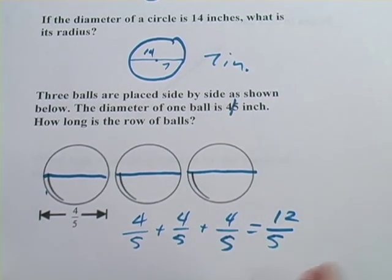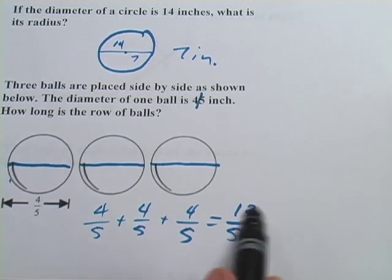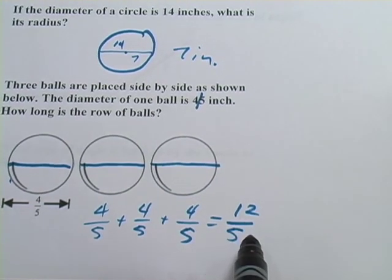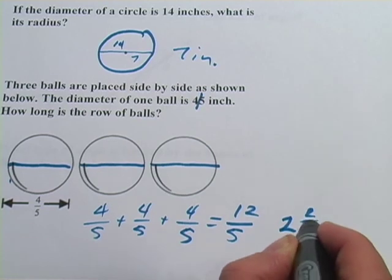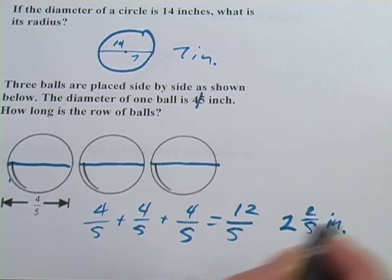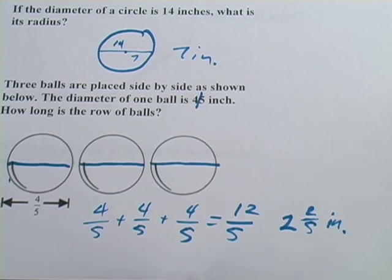And maybe that's the answer that they want you to choose. Or maybe they've turned this into a mixed number. How many fives could I take out of 12? I could take out 2, and that would leave 2 left over. So it would be 2 and 2 fifths inches. So that's a little bit about the measures of a circle.